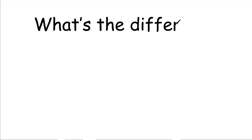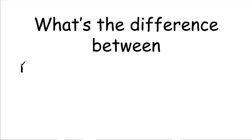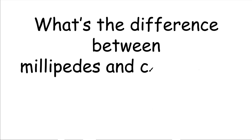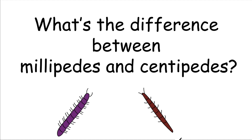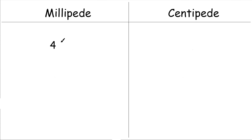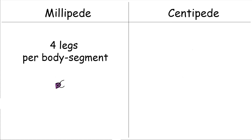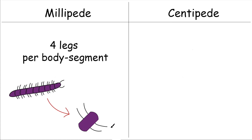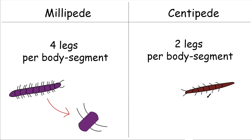What are the differences between millipedes and centipedes? This video will briefly explain. The first main difference is the number of legs each has. Millipedes have more legs — each body segment has a total of four legs per segment. Centipedes have only two legs per body segment.